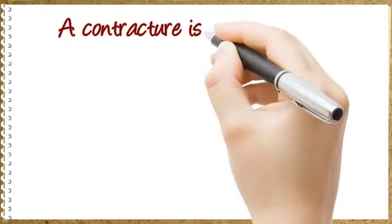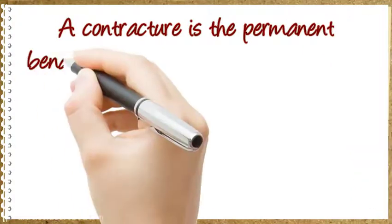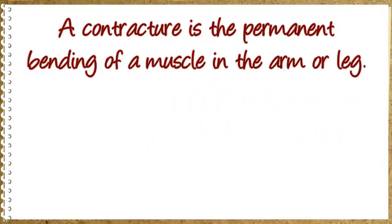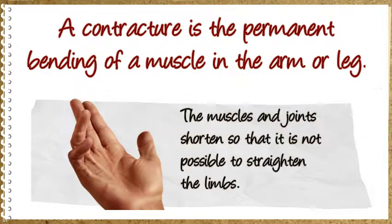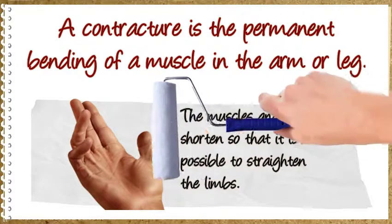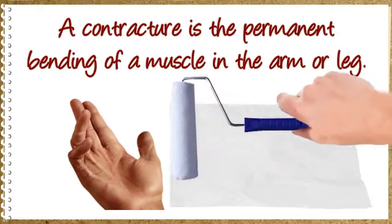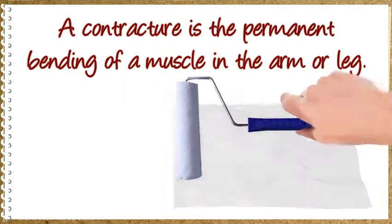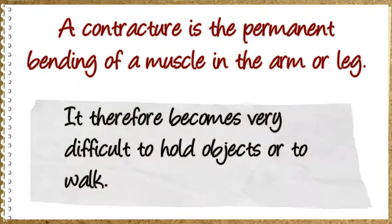A contracture is the permanent bending of a muscle in the arm or leg. The muscles and joints shorten so that it is not possible to straighten the limbs, making it very difficult to hold objects or to walk.